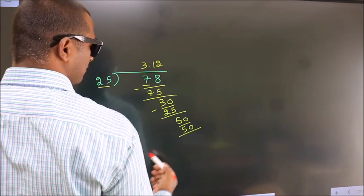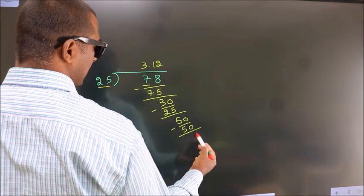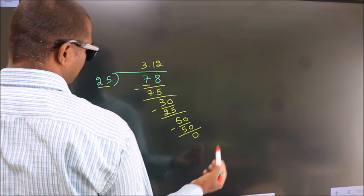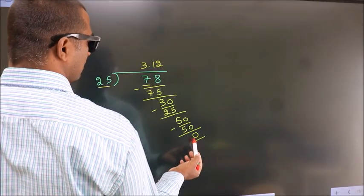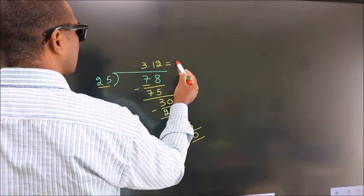Now we subtract, we get 0. Here we got remainder 0, so this is our quotient.